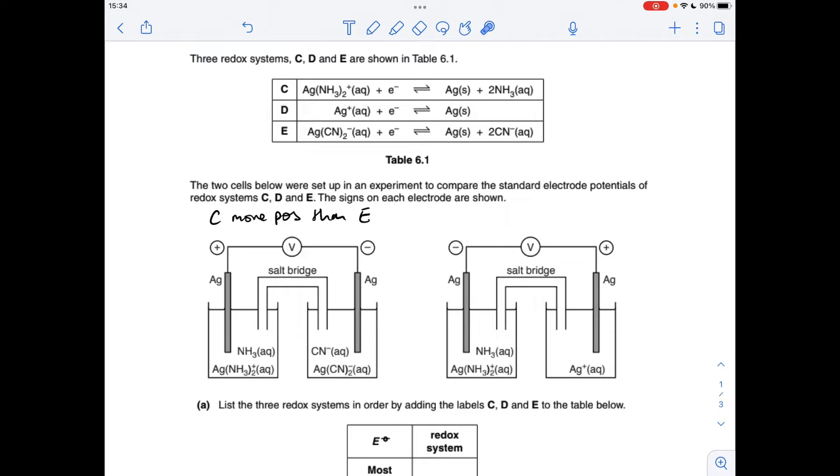So that's telling us that the silver, silver plus, which is system D, has a more positive electrode potential than this one, which is system C.